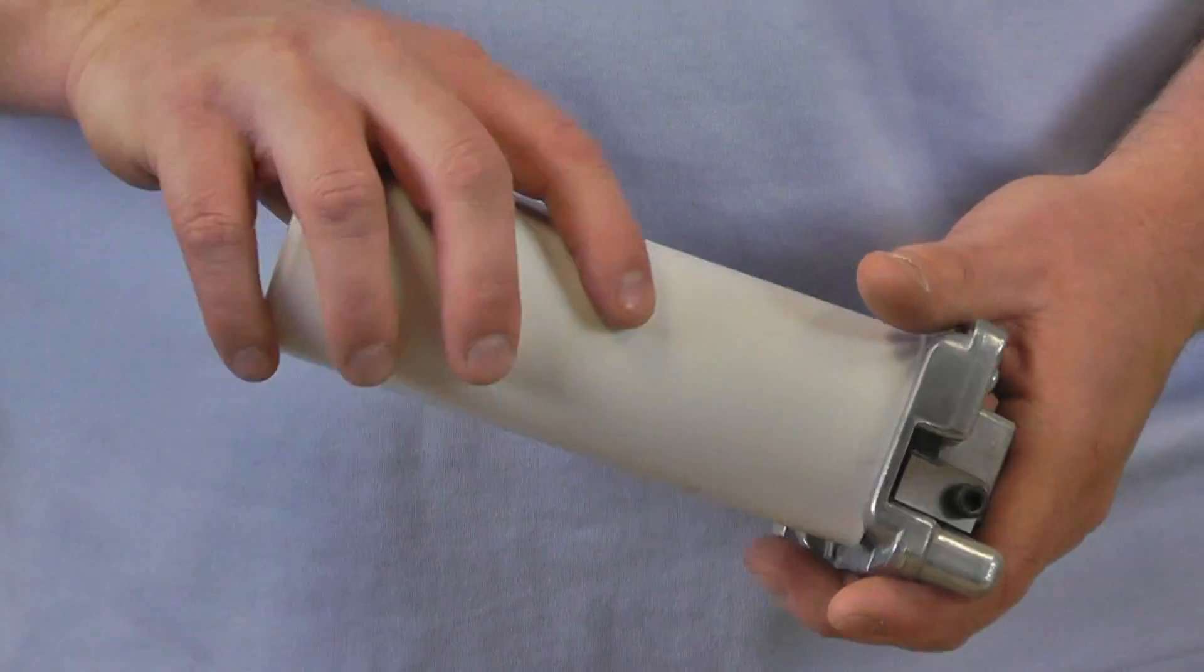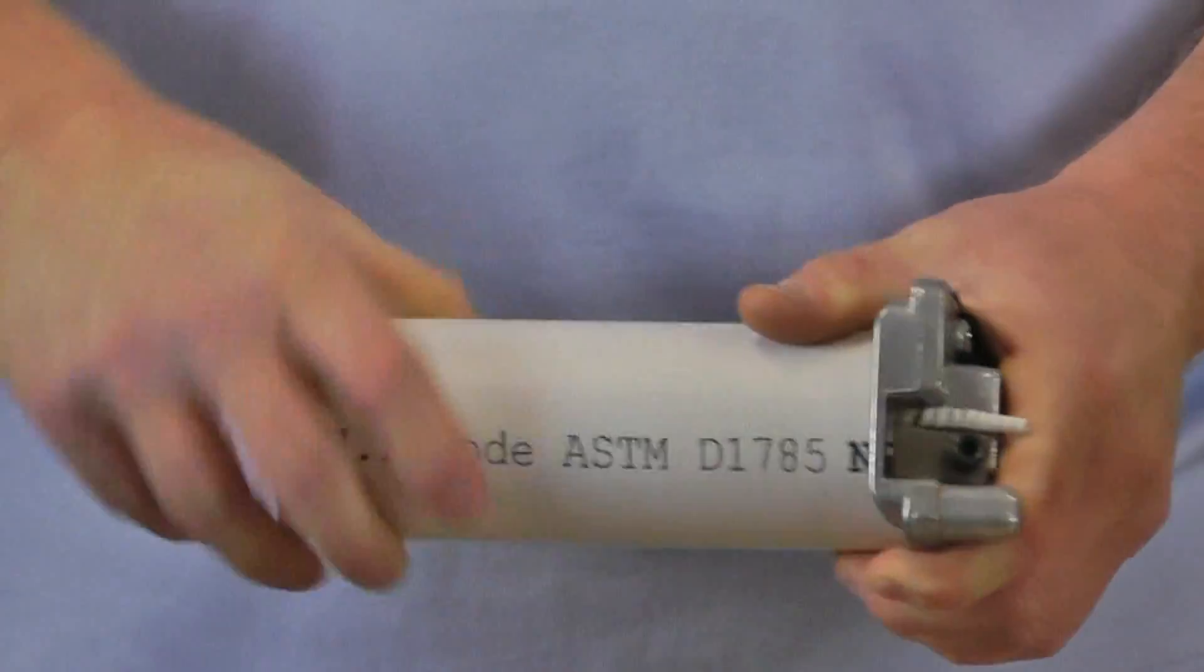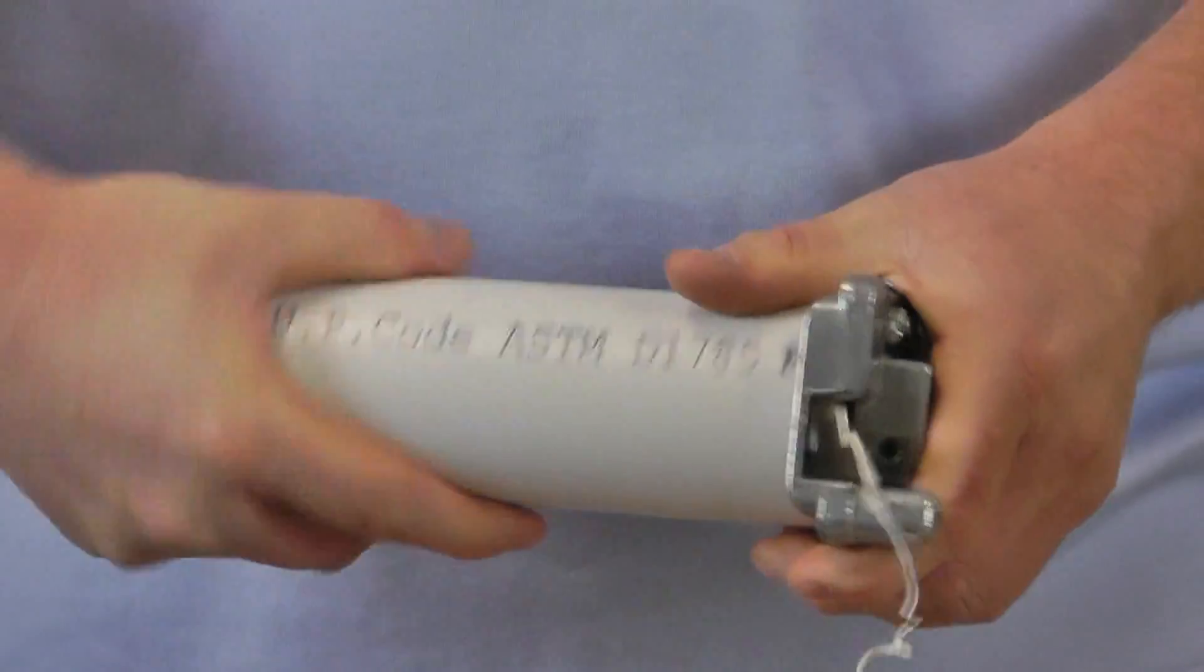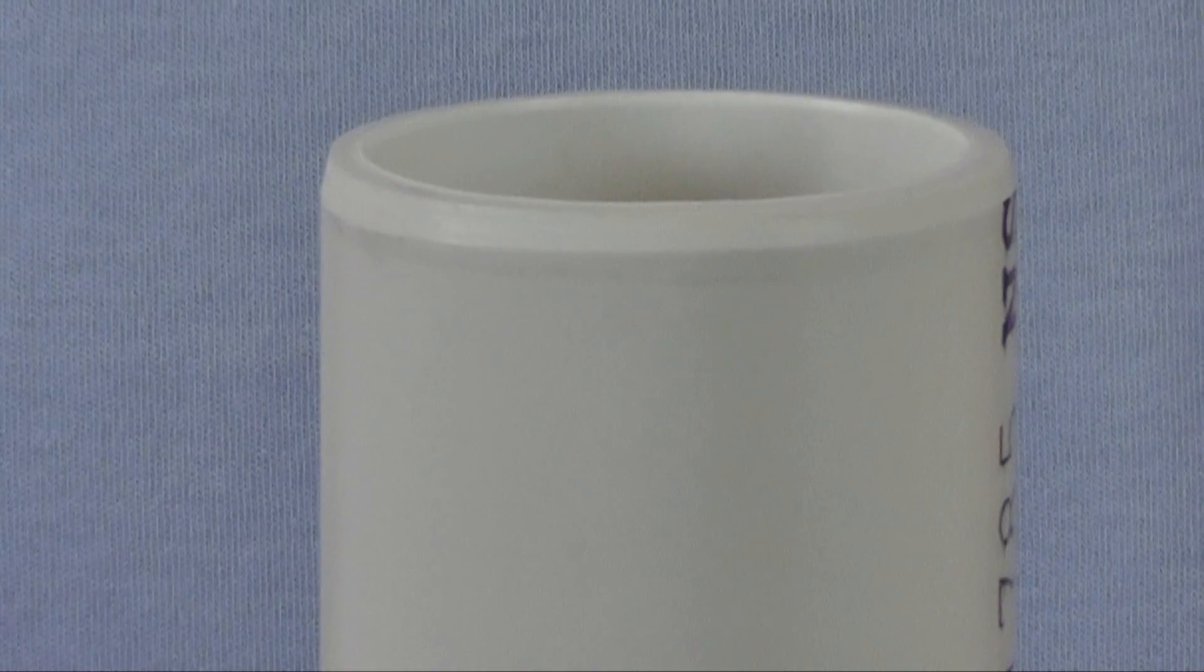Once the pipe is cut squarely, make a 10 to 15 degree bevel around the cut using the beveling tool. This can also be accomplished by carefully working a file around the outside diameter of the cut surface.